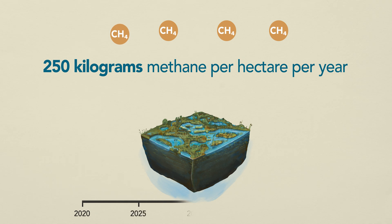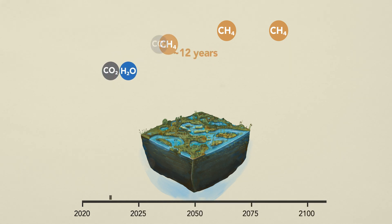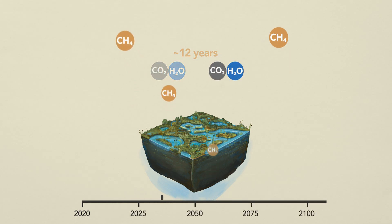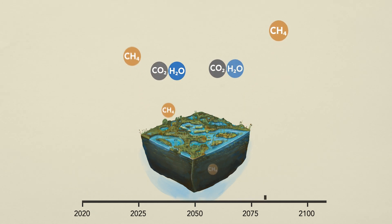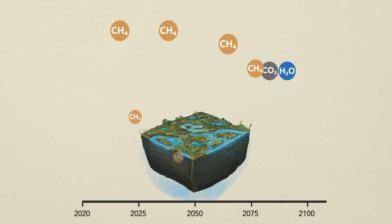Moreover, methane stays in the atmosphere for only 12 years on average, before it decays to CO2 and water. Because of its short lifetime, as much methane will be removed from the atmosphere as is added. A dynamic equilibrium is established in which the total amount of methane remains stable.